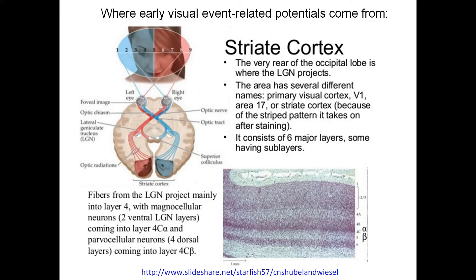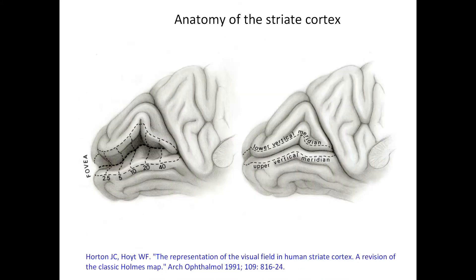The information is inverted in two ways. First, what is left in the real world is projected on the right, and what is top, the upper visual field, is projected in the lower part of the calcarine sulcus.